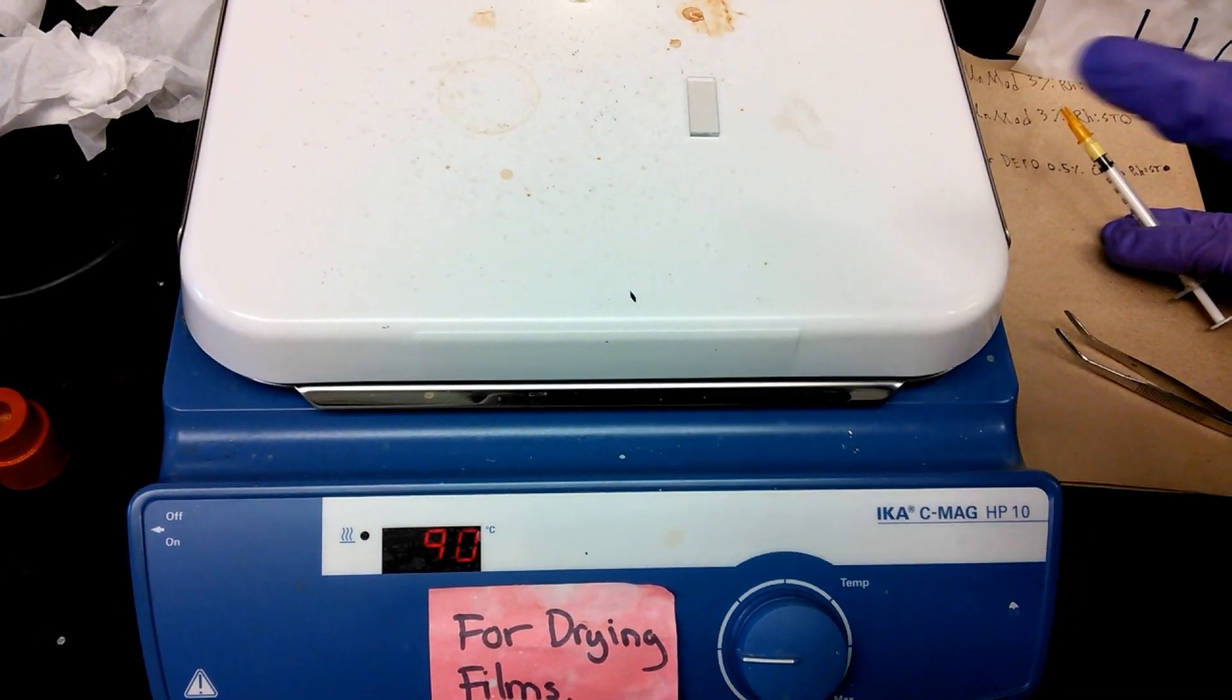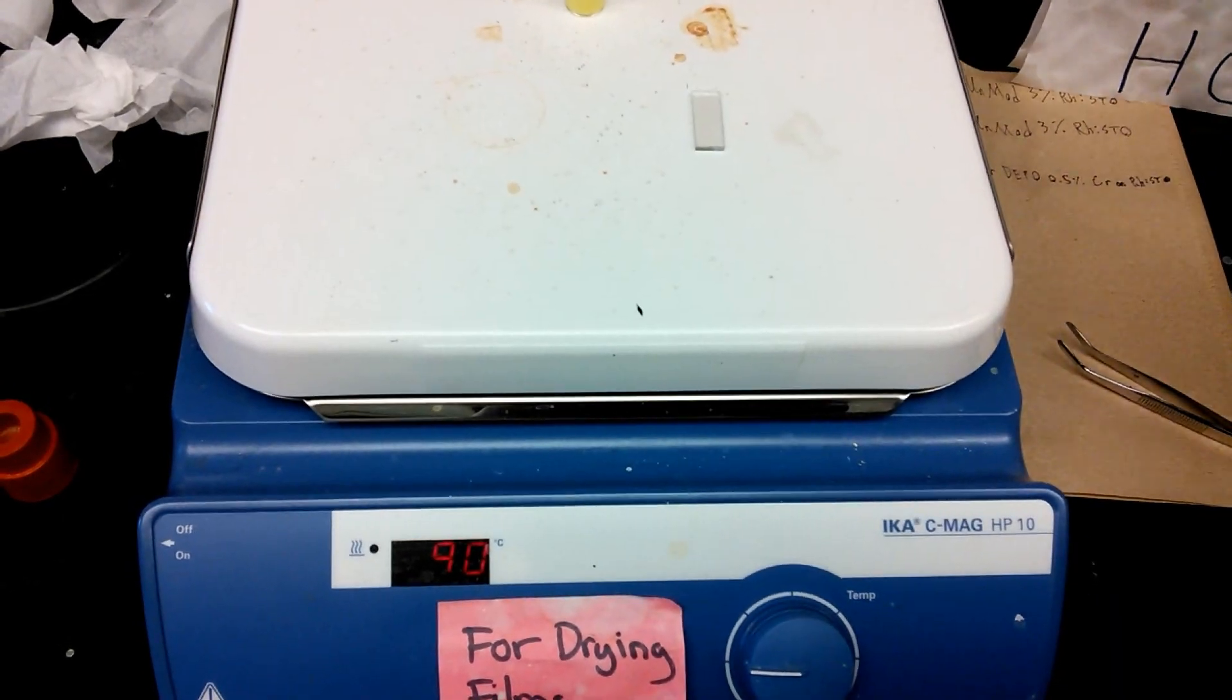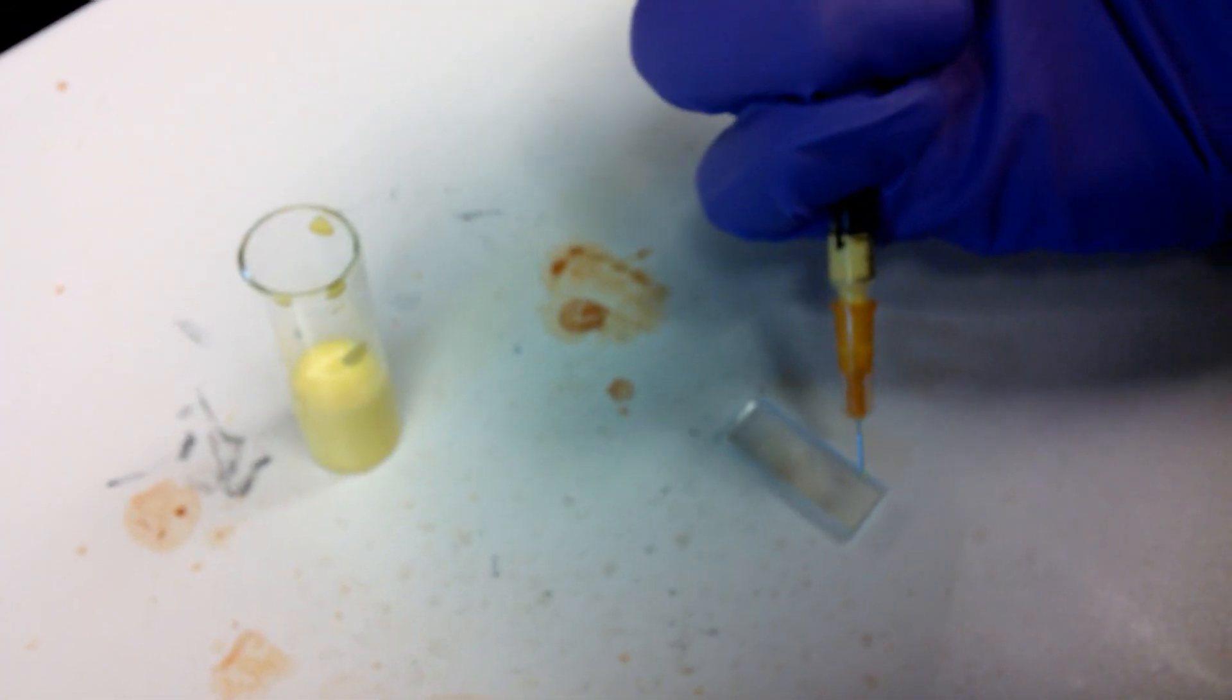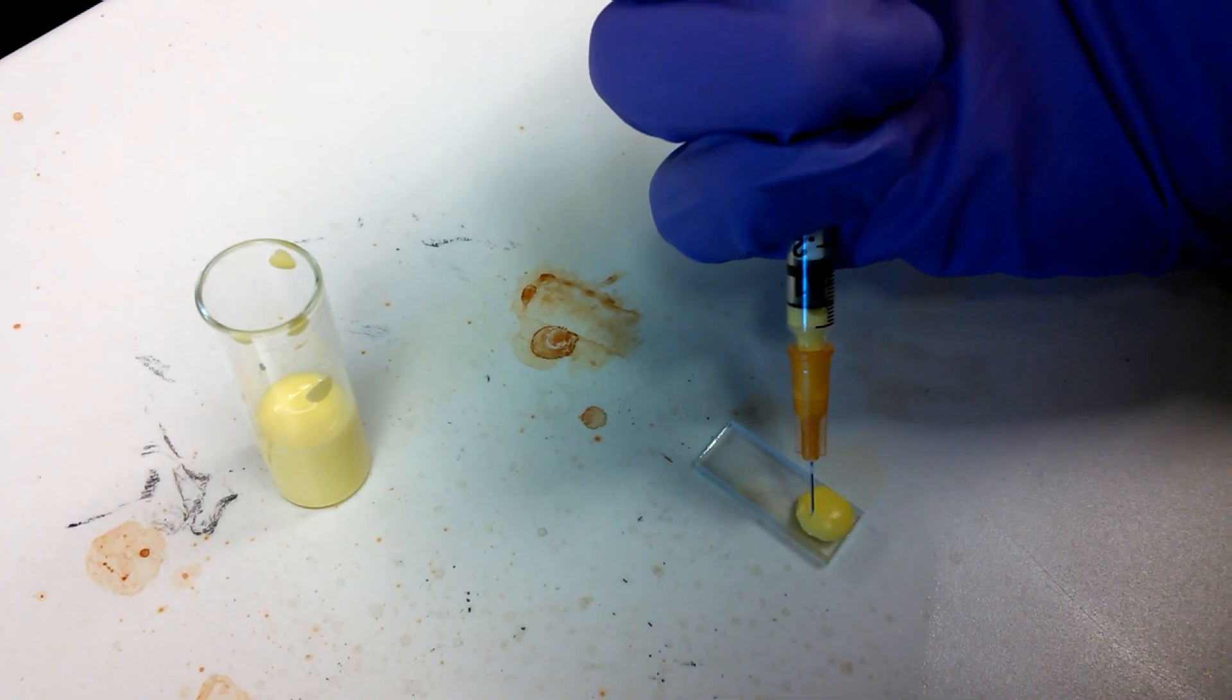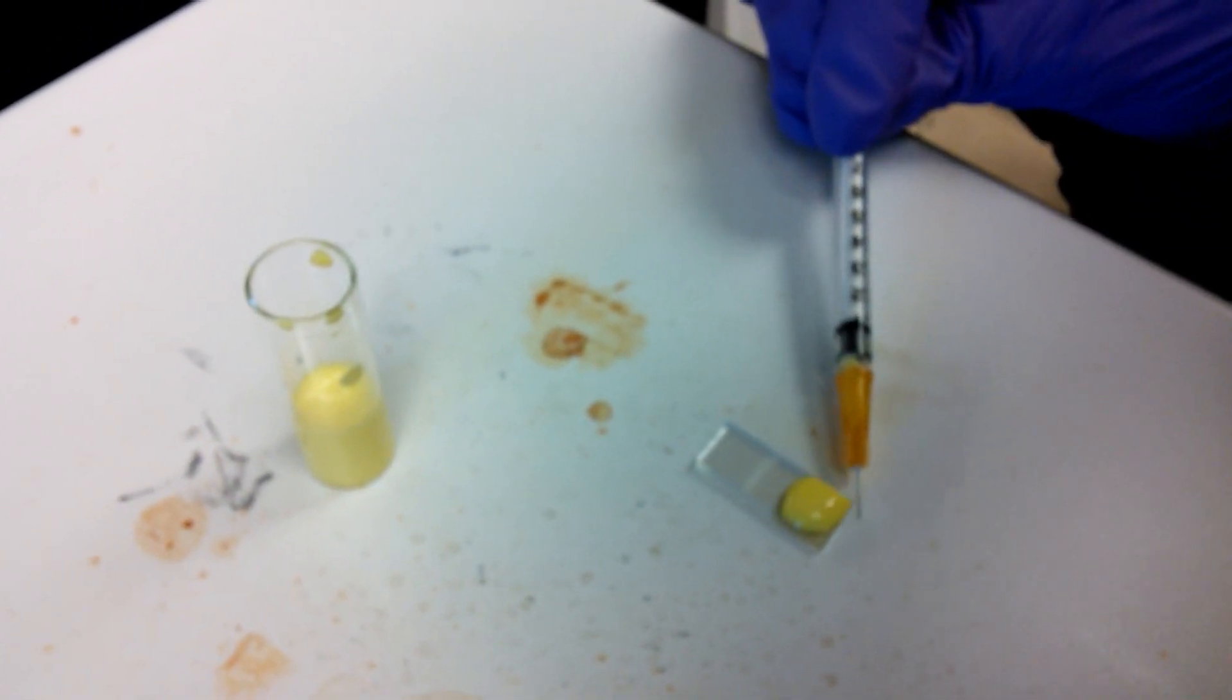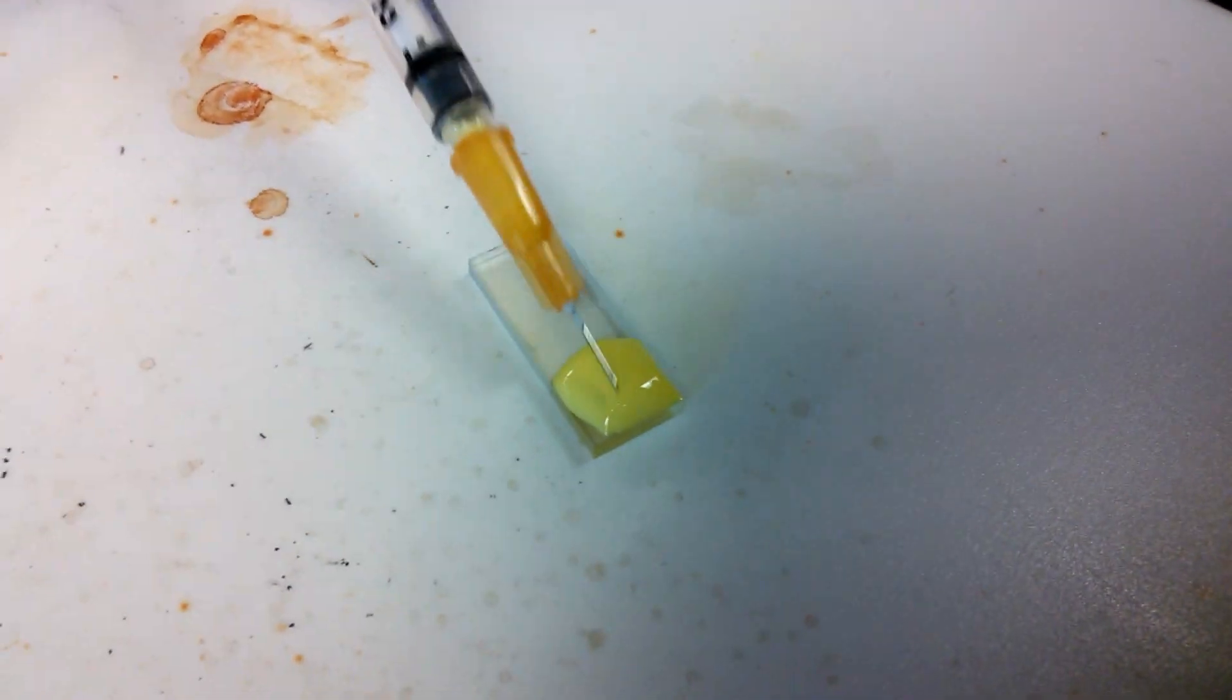To make our films, we preheat the substrate to approximately 90 degrees Celsius and then use a syringe to apply a desired amount of our suspension to the substrate. The syringe can then be used to spread out the suspension to cover the desired area of the substrate.